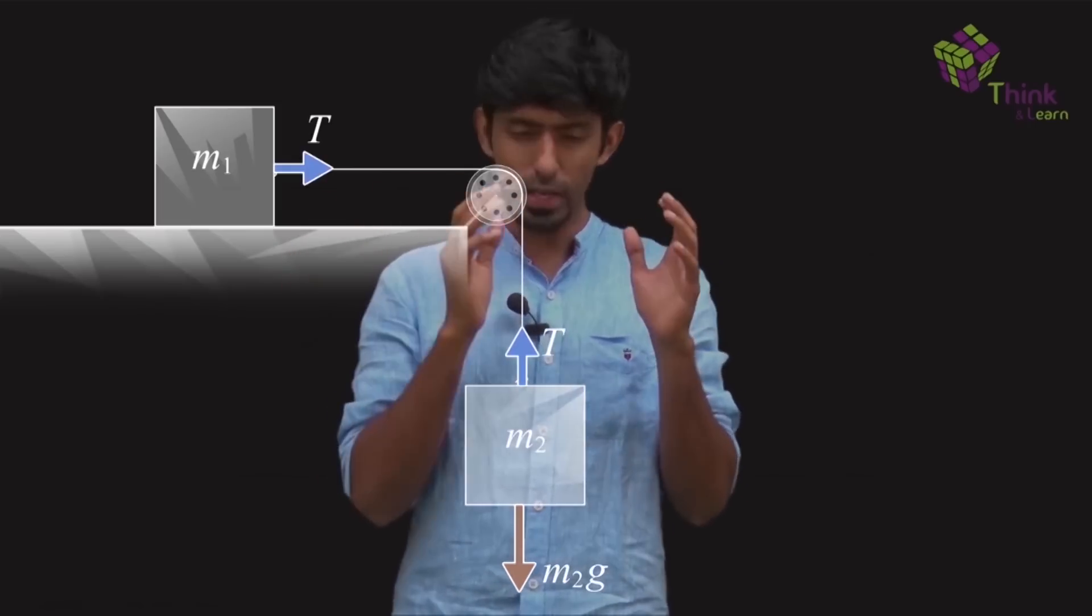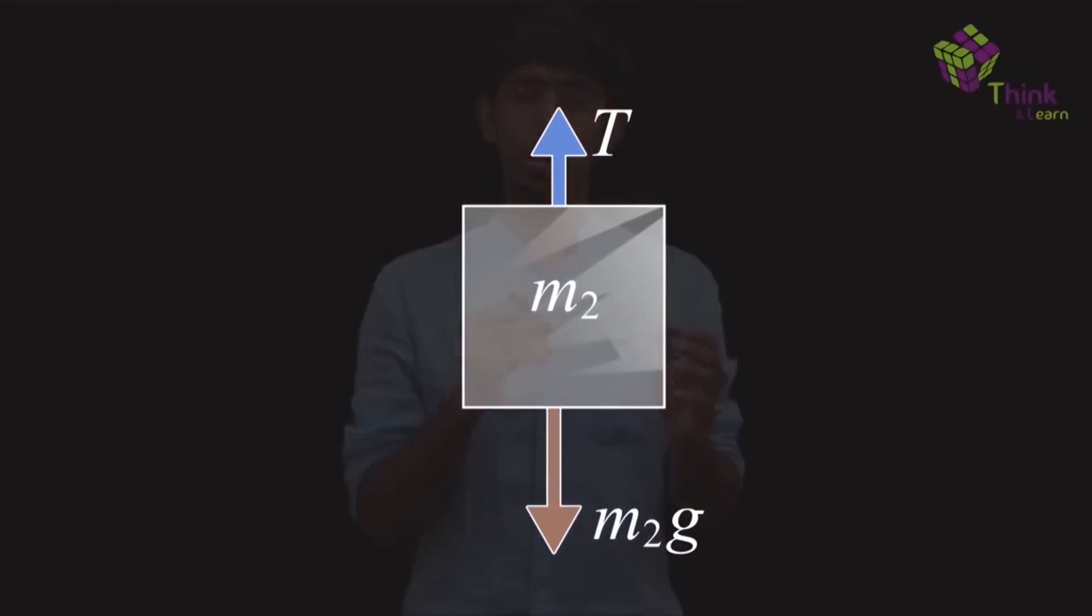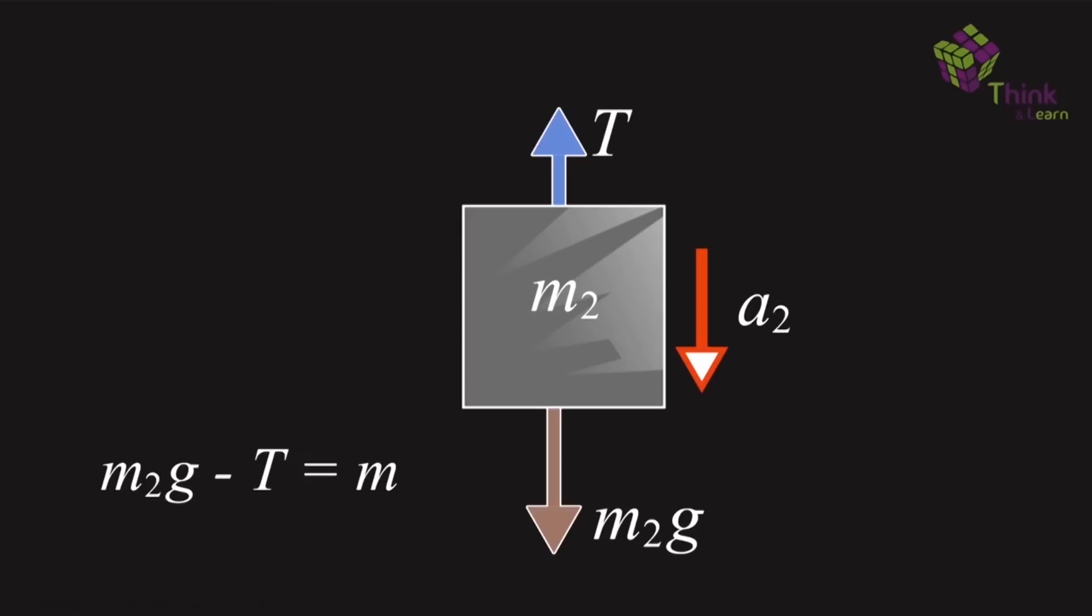So I have marked out my forces. Let me take body m2 first and I will write out the equation for it. It has an acceleration a2 pointing downwards. So now, which must mean that by this diagram, m2g, the force downwards must be larger than T upwards. So the equation will be m2g minus T equals m2 into a2, Newton's second law equation. This is what we will write for every single body.